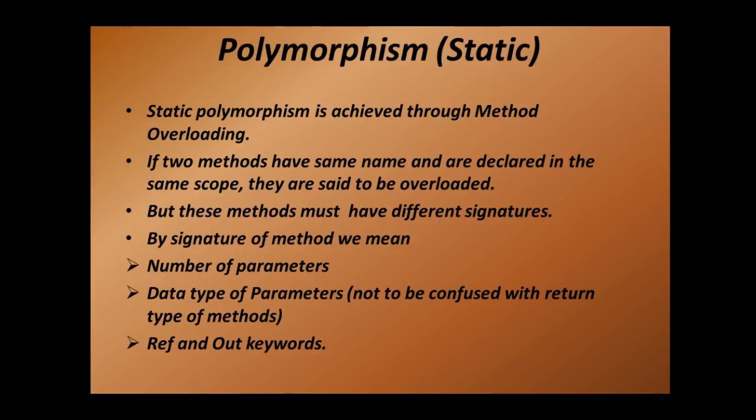The signature means the number of parameters that method takes, the data type of parameters, and the ref and out keywords. To understand all these points we should look into our example first and then I will explain these points.